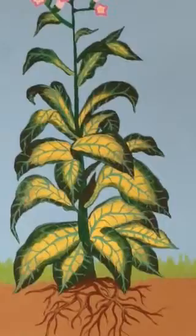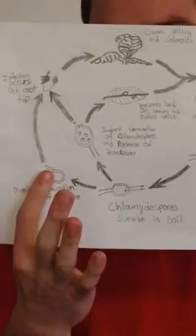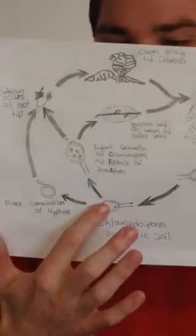I have also drawn a disease cycle for black shank. We begin with the chlamydospore surviving in the soil, and then it either takes two routes: direct germination, where it begins growing a small hyphae out of its spore, and then goes on to infect the root tip and buries itself inside the plant cells.